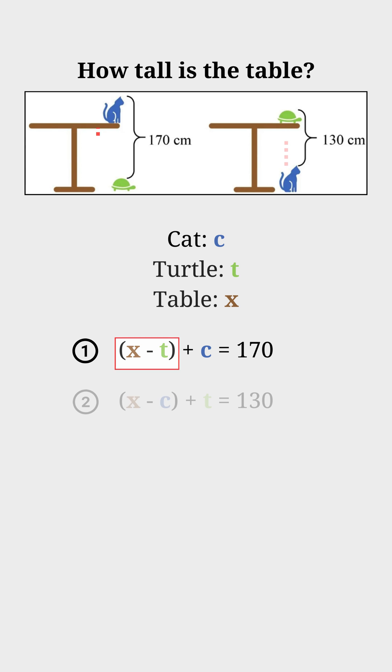For the second picture, X minus C is the distance from the top of the cat to the top of the table. Then that plus T is 130.